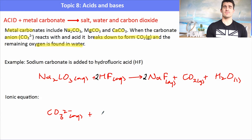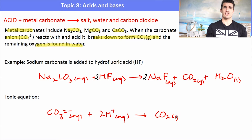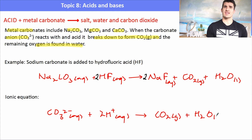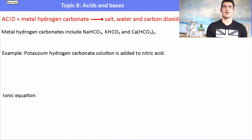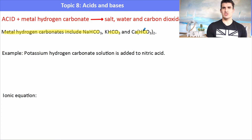For the ionic equation, after separating the ions, the spectator ions are the sodium ions and the fluoride ions — we omit them. This gives us the ionic equation: CO₃²⁻(aq) + 2H⁺(aq) → CO₂(g) + H₂O(l).